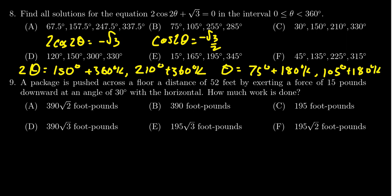So we definitely need to find an answer which includes 75 and 105. We see choice B has that. Notice that 255, that's 75 plus 180. And then 285 is 105 plus 180. So the correct answer would then be choice B.